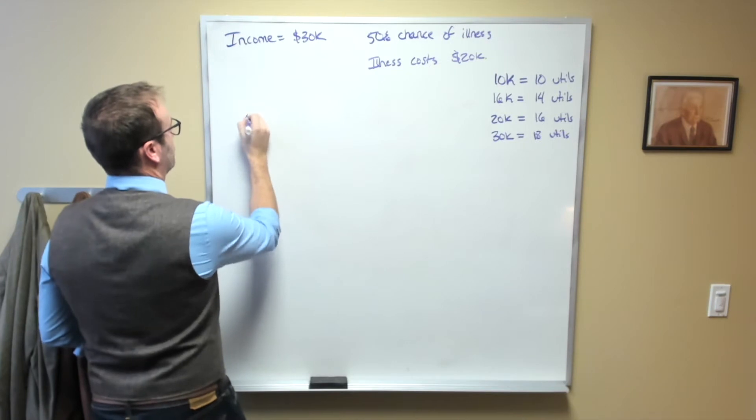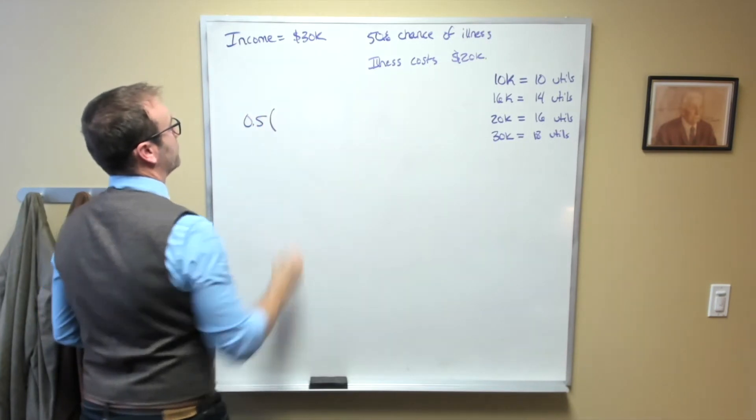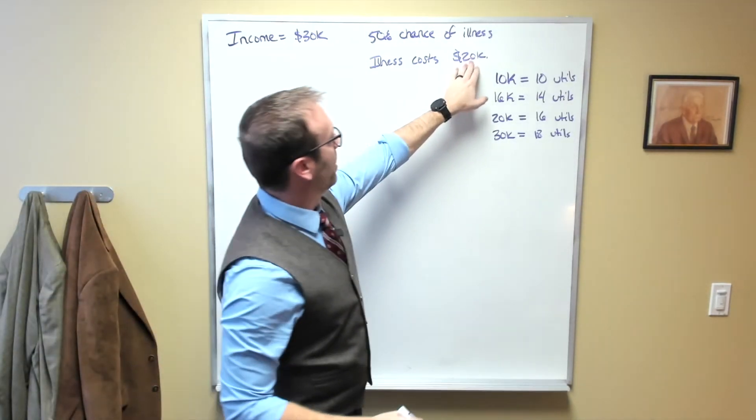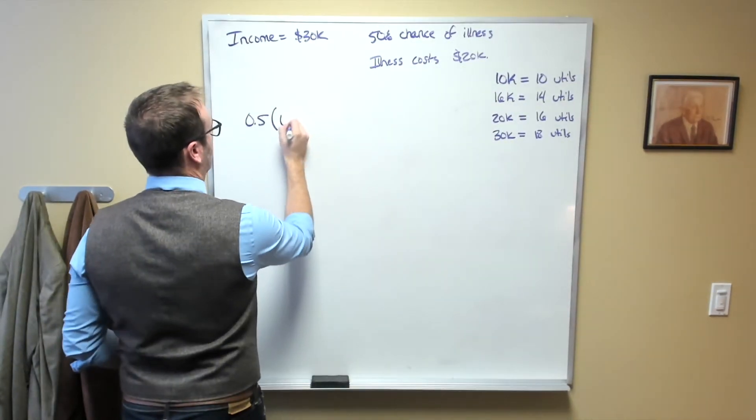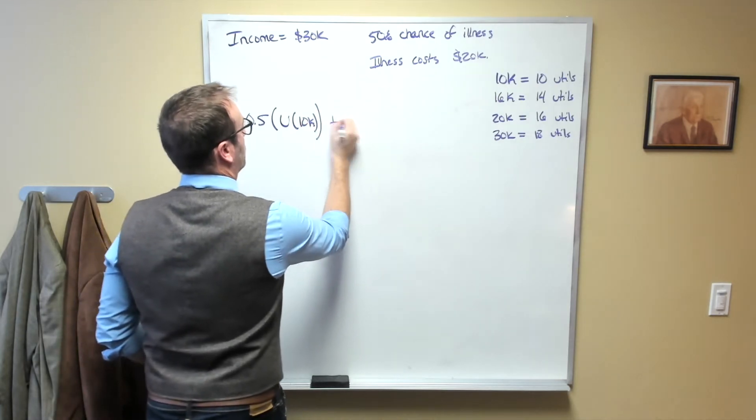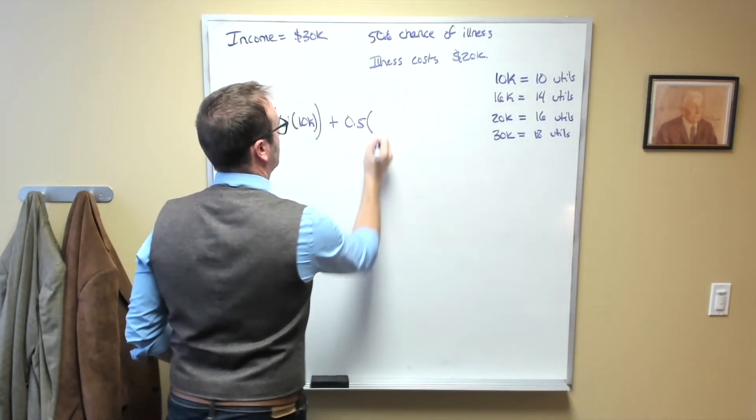So that would be $30,000 minus $20,000. So we'll call that U of 10 grand plus 0.5 times the utility if they are not sick.